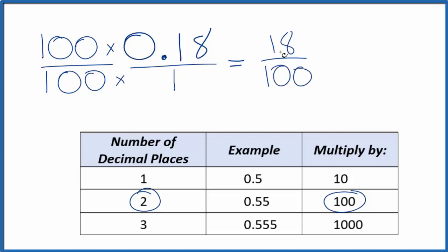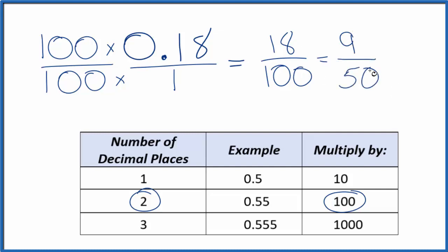Now we have a fraction, and we can reduce this down to lowest terms. It looks like if we divide the top by 2 — 18 divided by 2 is 9 — and then 100 divided by 2 gives us 50. And we can't reduce this down any further. If you take 9 over 50, or 18 divided by 100, you'll get 0.18. They're the same thing.